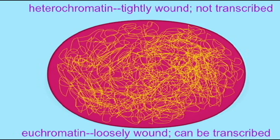One of the ways in which a gene's activity can be regulated is that a cell can control whether the DNA is tightly wound in the form of heterochromatin, or unwound and thus accessible in the form of euchromatin.